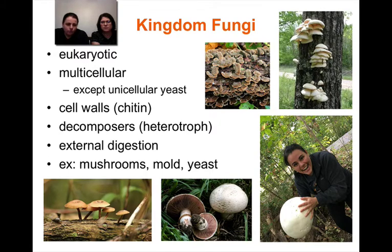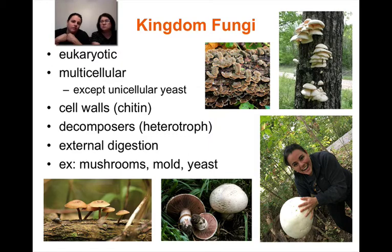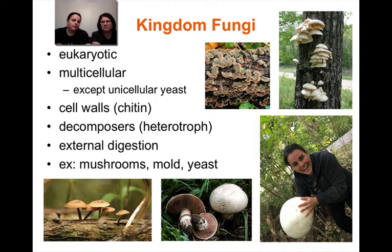Fungi perform something called external digestion. We do internal digestion — we put food into our bodies, break it down, take the nutrients from our digestive system, and get rid of the waste. Fungi do it from the outside: they release enzymes onto the outside of their bodies — onto that log, for example — which slowly breaks it down, and then they absorb the nutrients back into their bodies. External digestion is like holding an apple in your hand, spitting on it, and absorbing the nutrients through your hand.